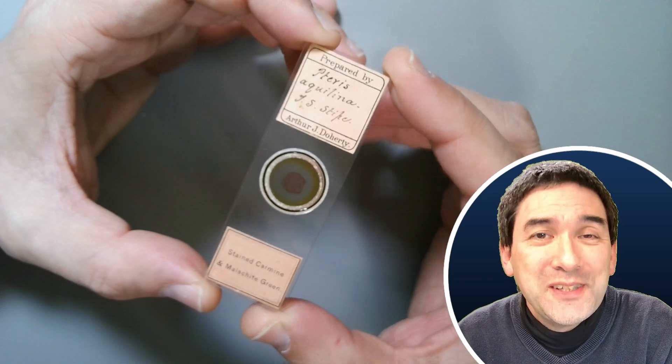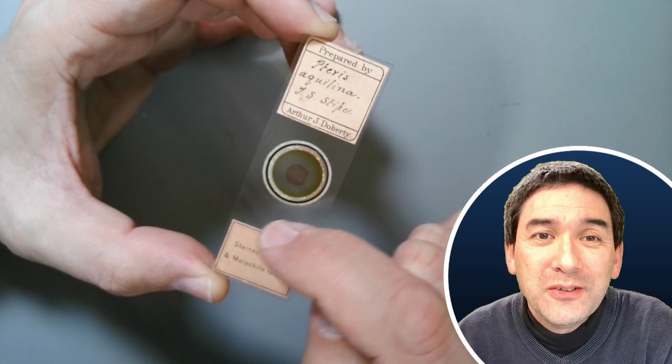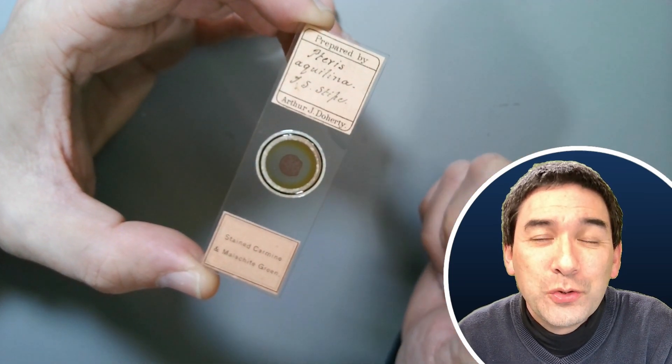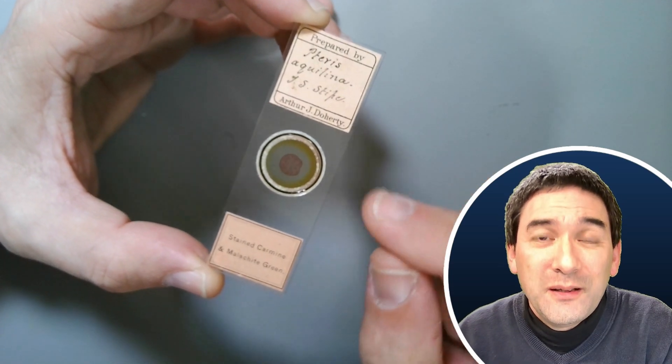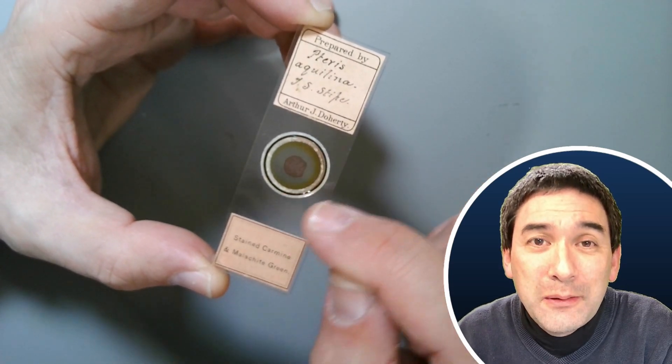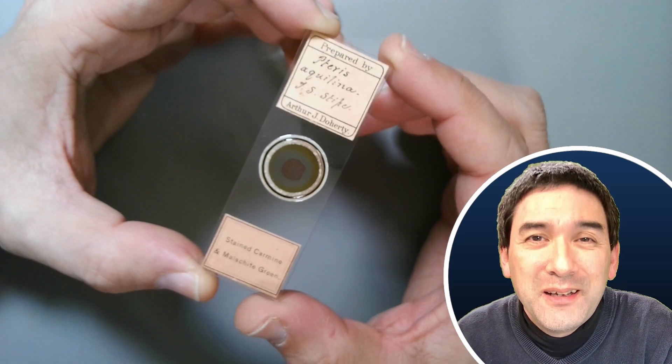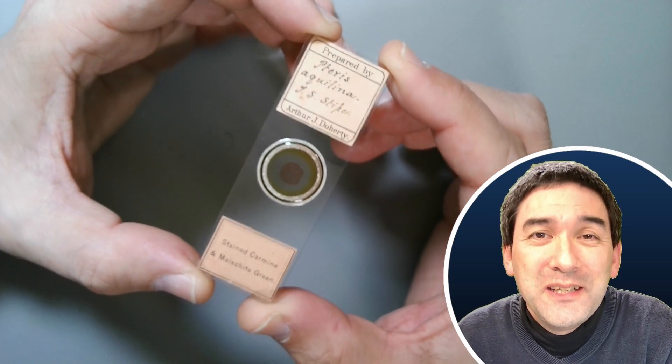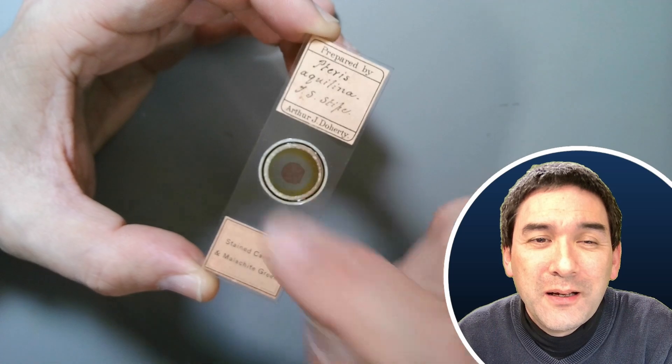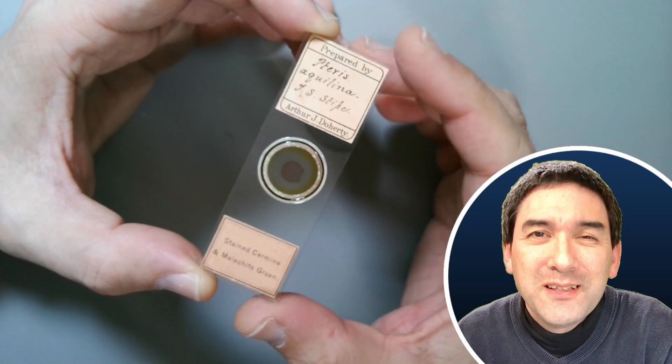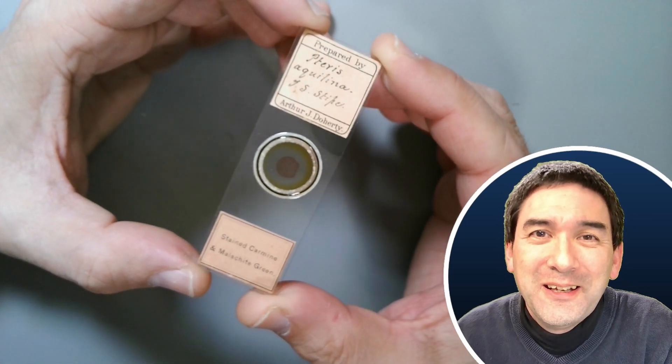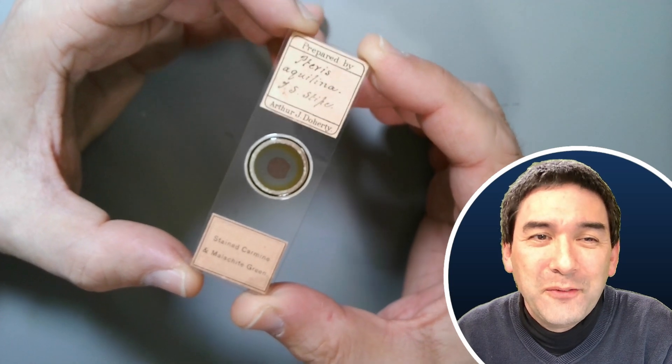And also another thing that you might notice is that the slide is ringed here. And the ring is here to protect the mounting medium and to stabilize the cover glass. But also, I've seen that several of his slides actually have this nice white black ringed pattern. So I think it's also maybe a little bit of a brand sign of his slides.